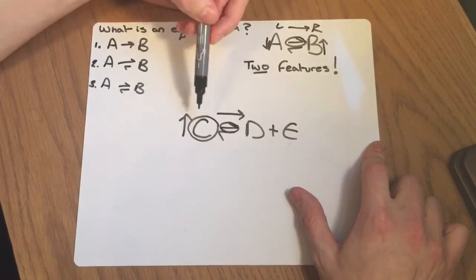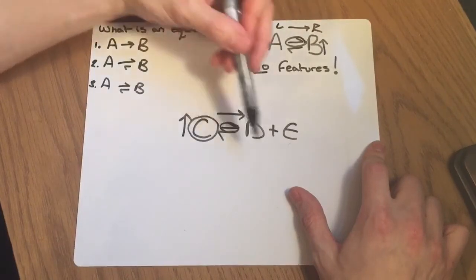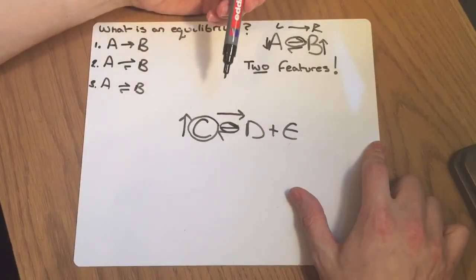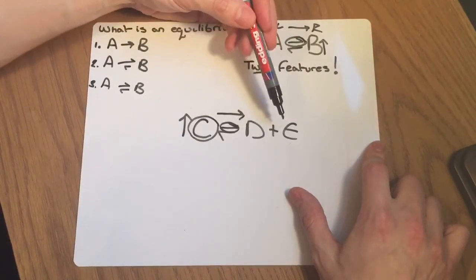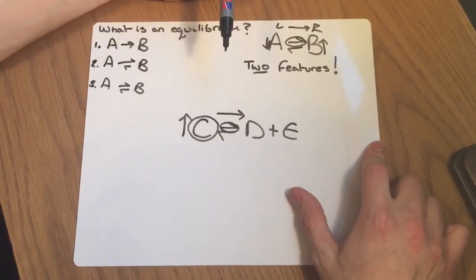So to sum up, if I increase the concentration of C in the mixture, then the equilibrium, according to Le Châtelier's principle, will oppose the change, shift to the right, and lower the concentration of C.